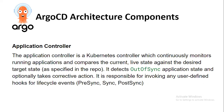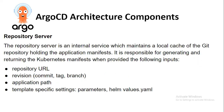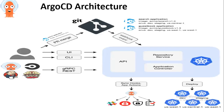The Application Controller is a Kubernetes controller which continuously monitors running applications and compares the current live state against the desired target state as specified in the repository. It detects out-of-sync application states and optionally takes corrective action. It is also responsible for invoking user-defined hooks for lifecycle events like pre-sync, sync, and post-sync. The three main components are API, Repository Service, and Application Controller, along with sync hooks, deploy, dev, staging, and so on.